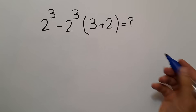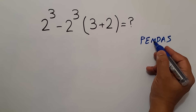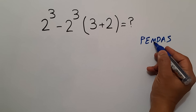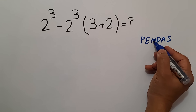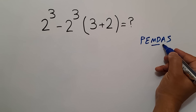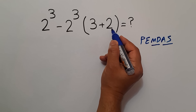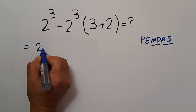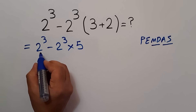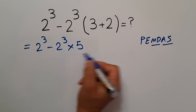According to the order of operations, PEMDAS: P stands for parentheses, E for exponents, M and D for multiplication and division, A and S for addition and subtraction. We first do parentheses, then exponents, then multiplication and division, and finally addition and subtraction. So here we first handle parentheses: 3 plus 2 gives us 5, so our expression equals 2 cubed minus 2 cubed times 5.